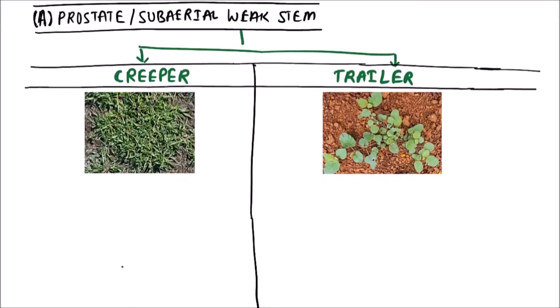Hello friends. In this video we are going to discuss the types of prostrate or subaerial weak stems. These are of two types: creeper and trailer. Now we will compare the creeper and trailer. Both are examples of prostrate weak stem.